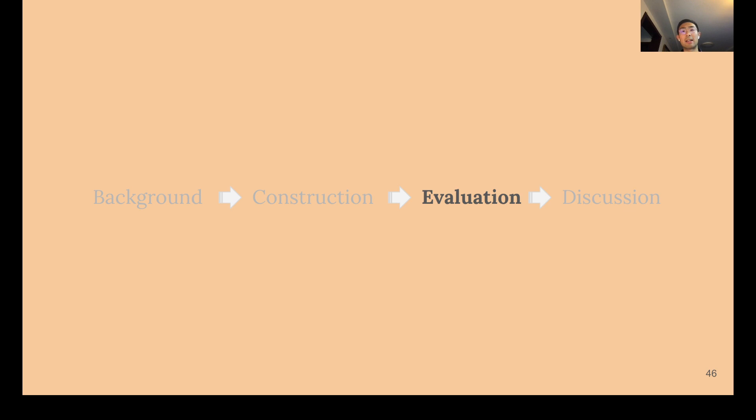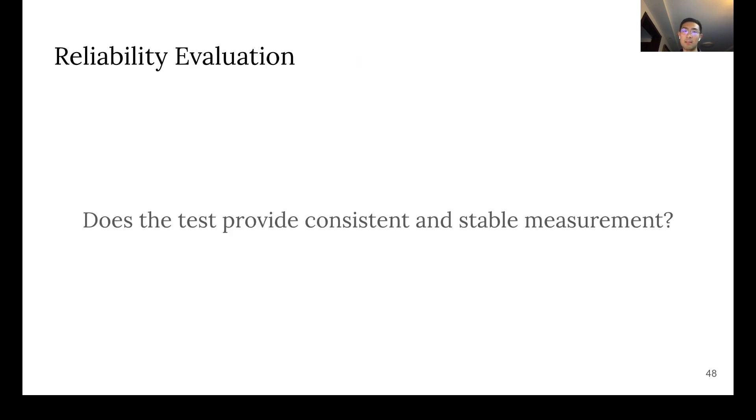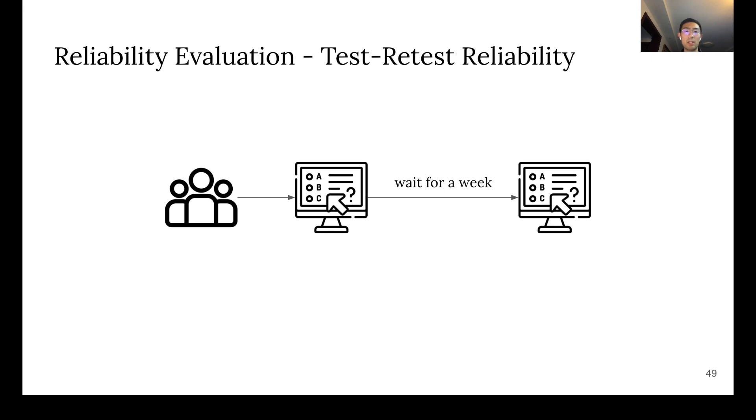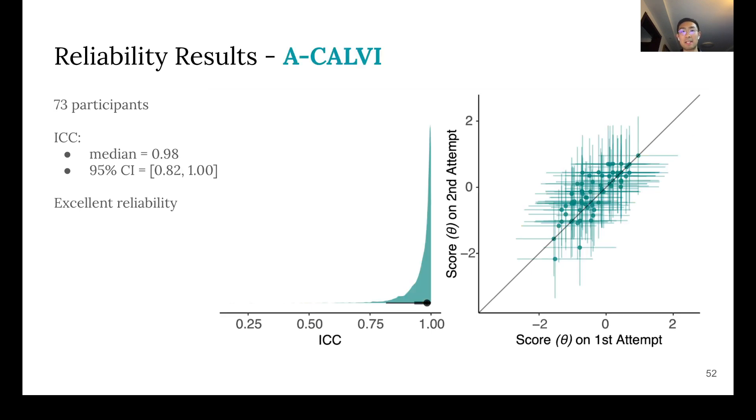Now, let's talk about how we evaluated our adaptive assessments. We evaluated them on two dimensions, reliability and validity. For reliability, we want to answer the question, does the test provide consistent and stable measurement? We used the notion of test-retest reliability. To measure this, we recruited participants to take our adaptive assessments twice with a week in between. We then computed the reliability coefficient ICC between their performance on their first attempt and their second attempt. We found that A-VLAT has excellent reliability. And so does A-CALVI.